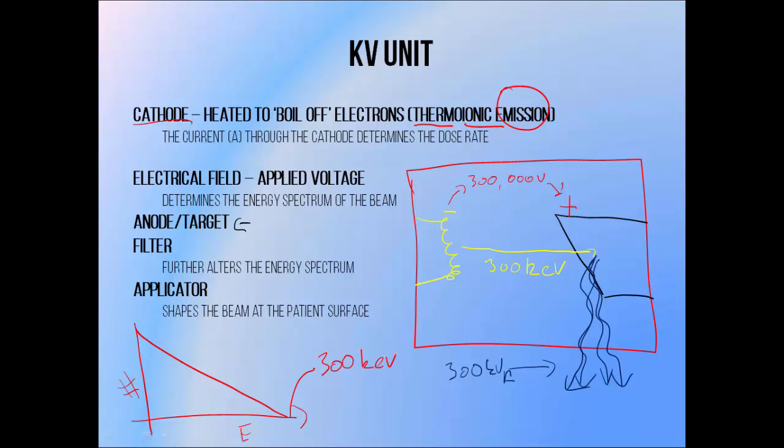The number of photons coming out of the tube will determine the dose rate. We can control this by controlling the current through the cathode, which — if you've ever seen diagnostic x-ray equipment in use — this is the milliamp, or mA setting. Increasing the current means more electrons passing through the cathode, which means more of them are being shaken out into the tube, accelerated towards the target, undergoing the bremsstrahlung interaction and producing photons, which means more photons and therefore more dose.